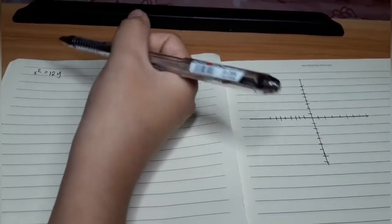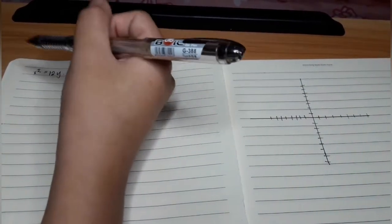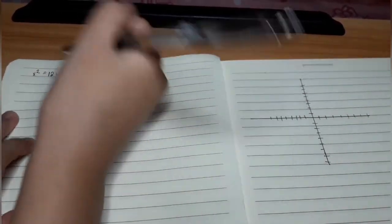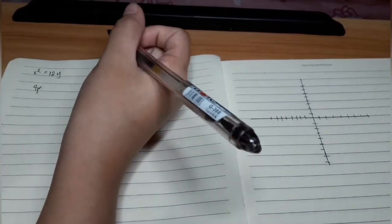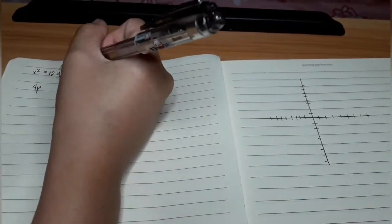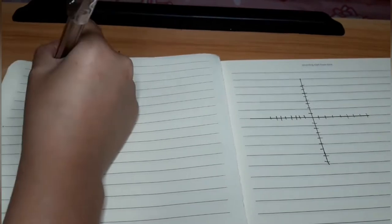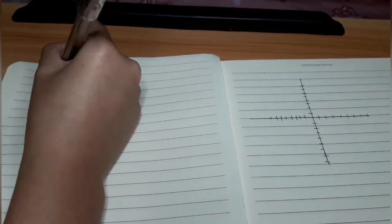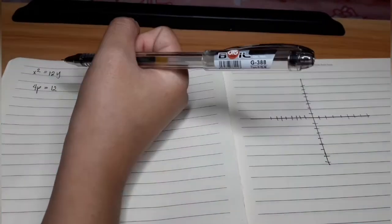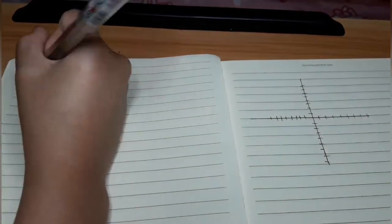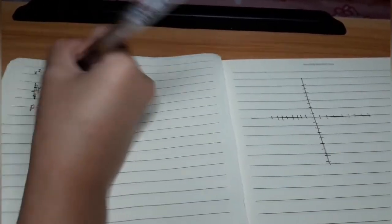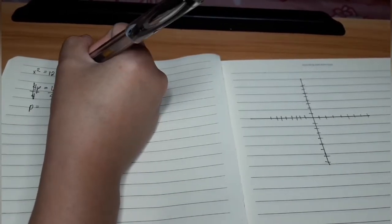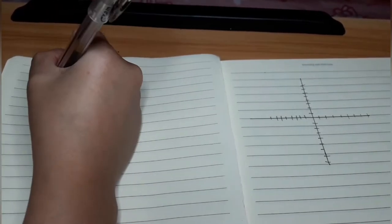In order for us to know if it is upward or downward, we need to solve p. Since our 4p is 12, we need to divide both sides by 4. p equals 12 divided by 4 is positive 3.